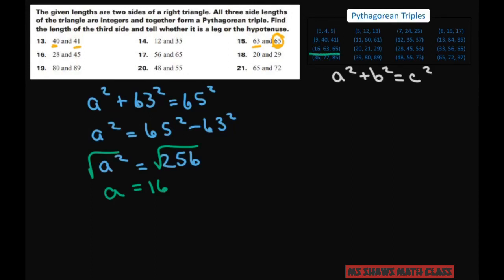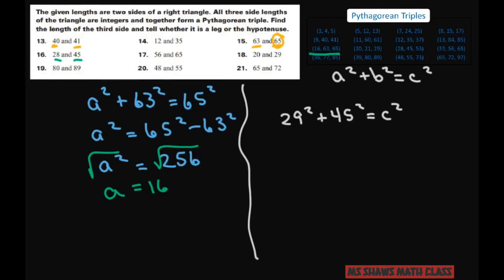Let's just act like we don't have the answers here and go for it. Let's say 28² + 45² = c². So 28² is 784, and 45² is 2,025. Add those together and you get 2,809.